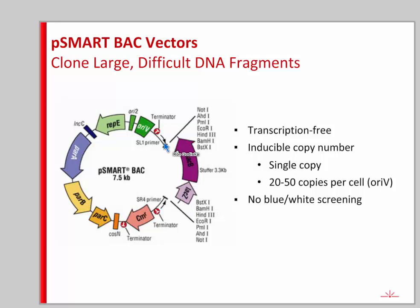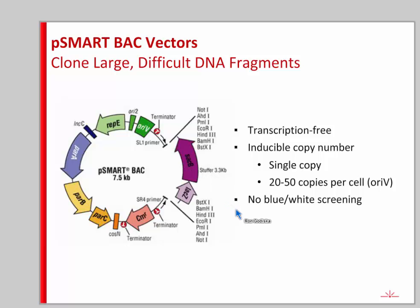In the presence of arabinose, the host cells have the TRF-A gene, a replication protein that works on the origin here and bumps copy number from single copy up to 20 to 50 copies per cell depending on the nature and size of the insert. Blue-white screening is not necessary — we deliberately removed it to improve insert stability in this vector.